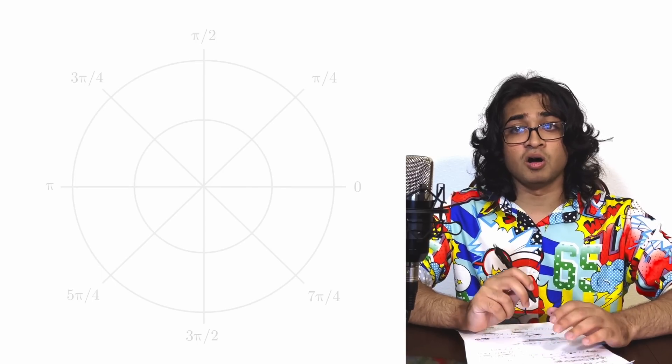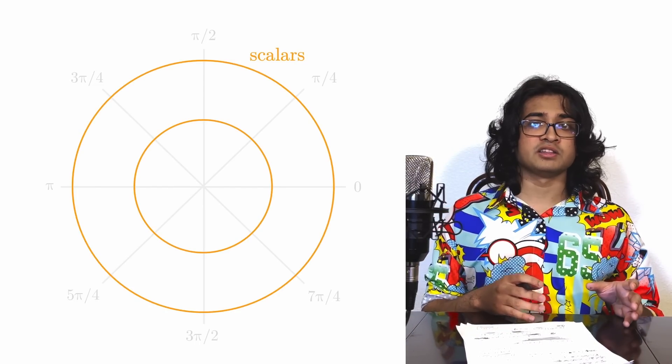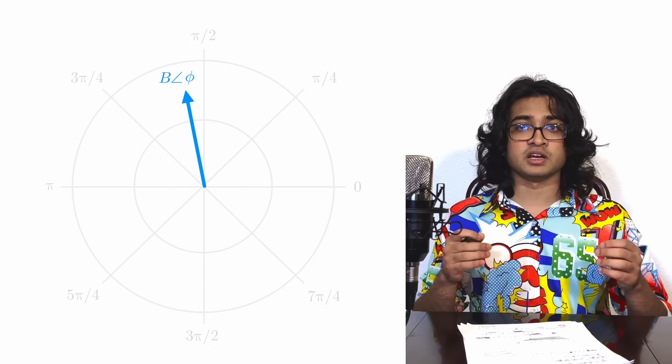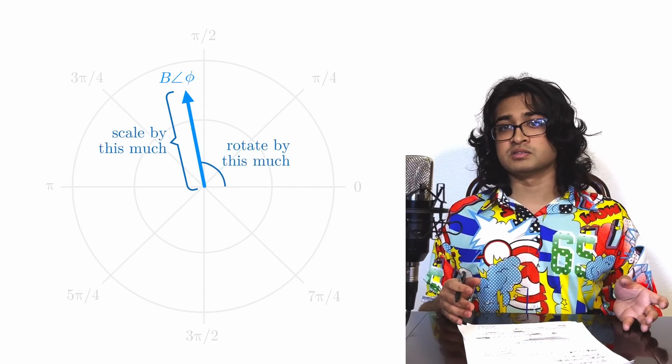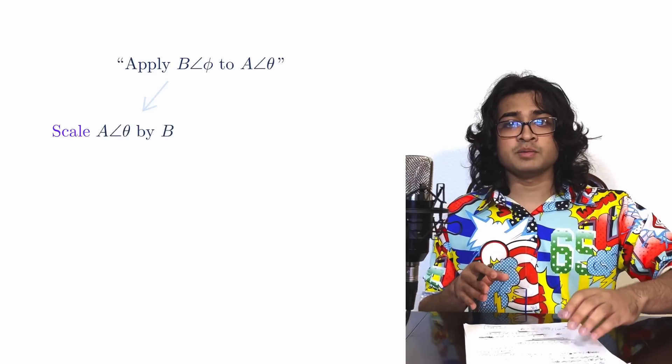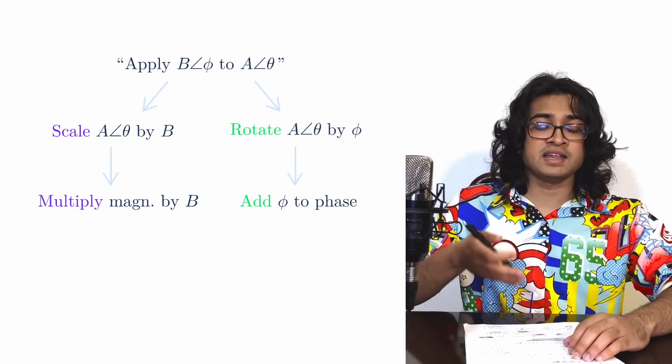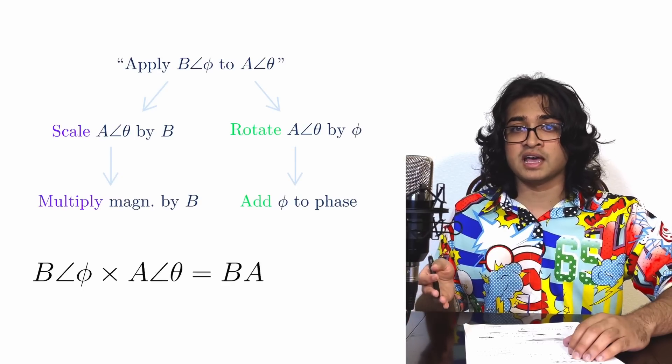Now, remember that we want our polar objects to also represent rotation and scaling. Since the magnitude of a polar object is a scalar and its phase is an angle, it's natural to have a polar object with magnitude B and phase phi represent the combined transformations of scaling by a factor B and rotating by an angle of phi radians. We can use multiplication to apply this transformation to other polar objects. Suppose we want to apply the transformation B angle phi to another polar object, A angle theta. We can scale it by a factor of B by multiplying the magnitude by B, and we can rotate it by phi radians by adding phi radians to the phase. So B angle phi times A angle theta should be BA angle theta plus phi.